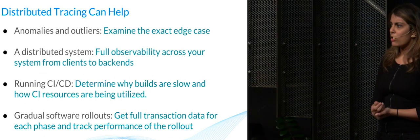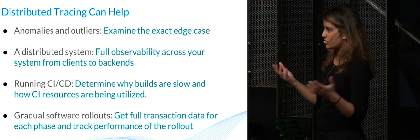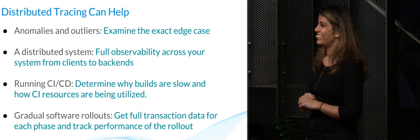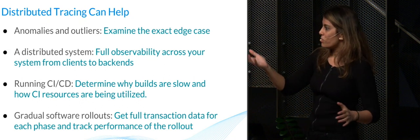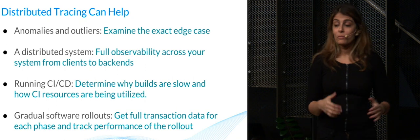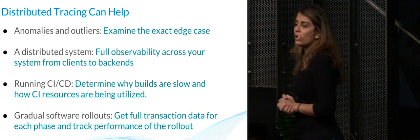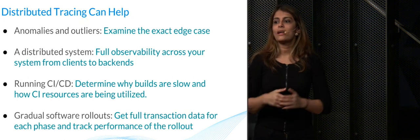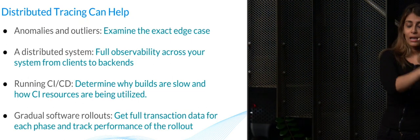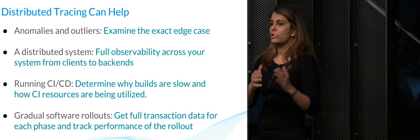If you're running a distributed system — out of curiosity, how many people here have a distributed system with at least two services? All right, a bunch of you. So you know what I'm talking about, where that observability can be really lost the minute there is any fragmentation. So with tracing, you can get a full picture of your system from the clients all the way to the backend and the responses that come out.